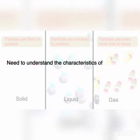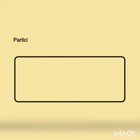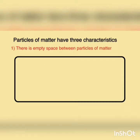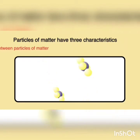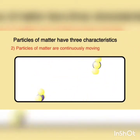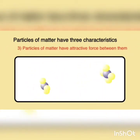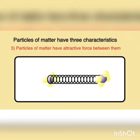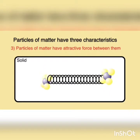Why do the particles of solid, liquid, and gas show different behavior? For this we need to understand the characteristics of particles of matter. There are three characteristics: first, there is empty space between the particles of matter, called the intermolecular space. Second, particles of matter are continuously moving randomly in all possible directions in a zigzag path. Third, the particles of matter have attractive force between them.